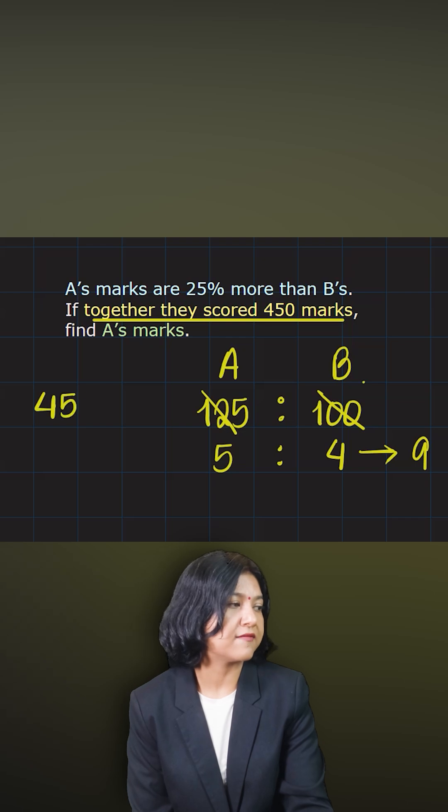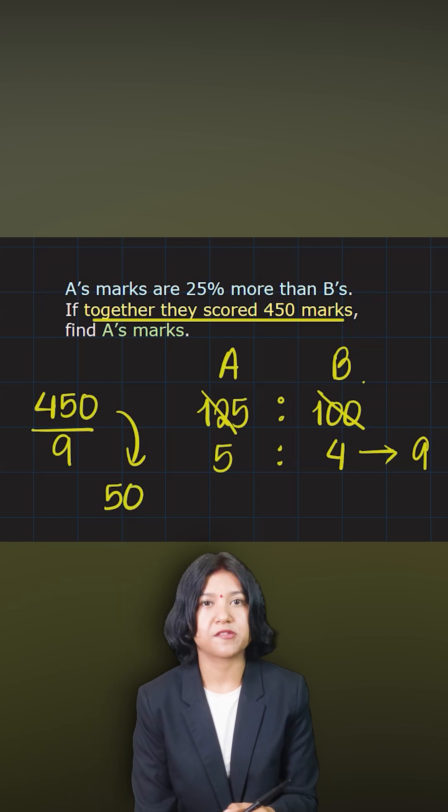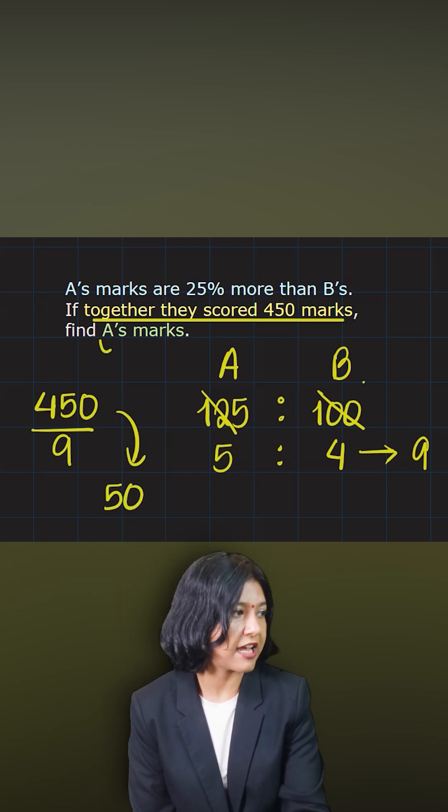So total of values will always be divided by the total of ratios. When you do that, you get the answer 50, which means one unit here in the ratio is 50 marks.